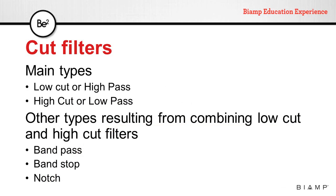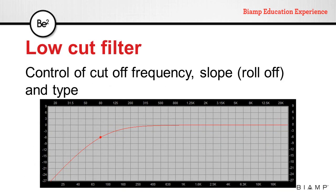Cut filters can come in two main types: low cut or high pass, and high cut or low pass. We can create other types of filters by combining two of these filters, like a band pass, band stop, or a notch. A low cut or high pass filter, as the name implies, will cut frequencies below a certain cutoff frequency. These filters are common on mixing board input channels and some constant voltage amplifiers, and their main use is to filter out unwanted low frequency noise or to protect loudspeakers.